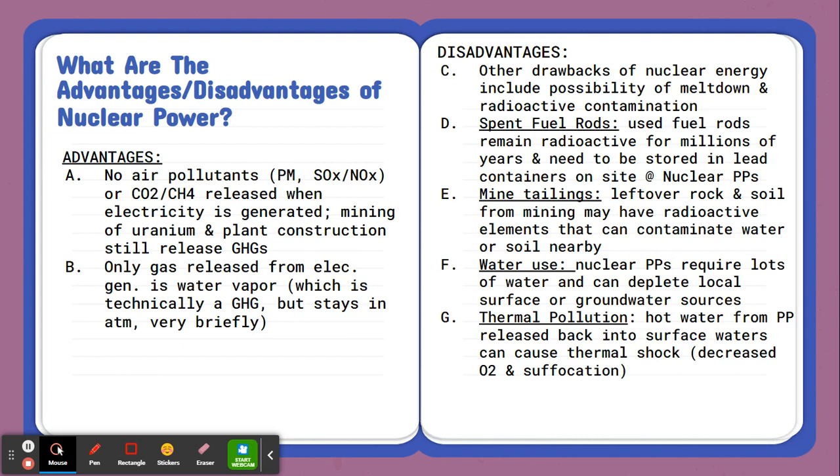As well as thermal pollution. So any of the hot water that's produced from the nuclear power plant can be released back into any local surface waters. And this water is really hot. So this actually goes back to ecological tolerance. Organisms may experience a physiological change and stress on their physiological systems when they go into thermal shock, since it's going to decrease the amount of oxygen and potentially suffocate the organisms in that local waterway.